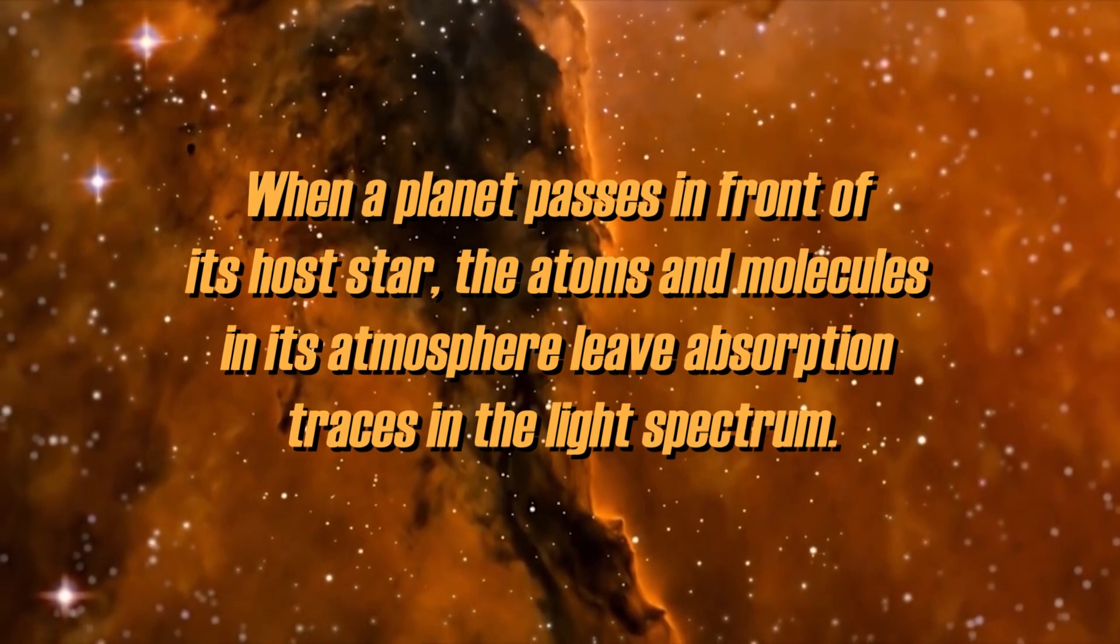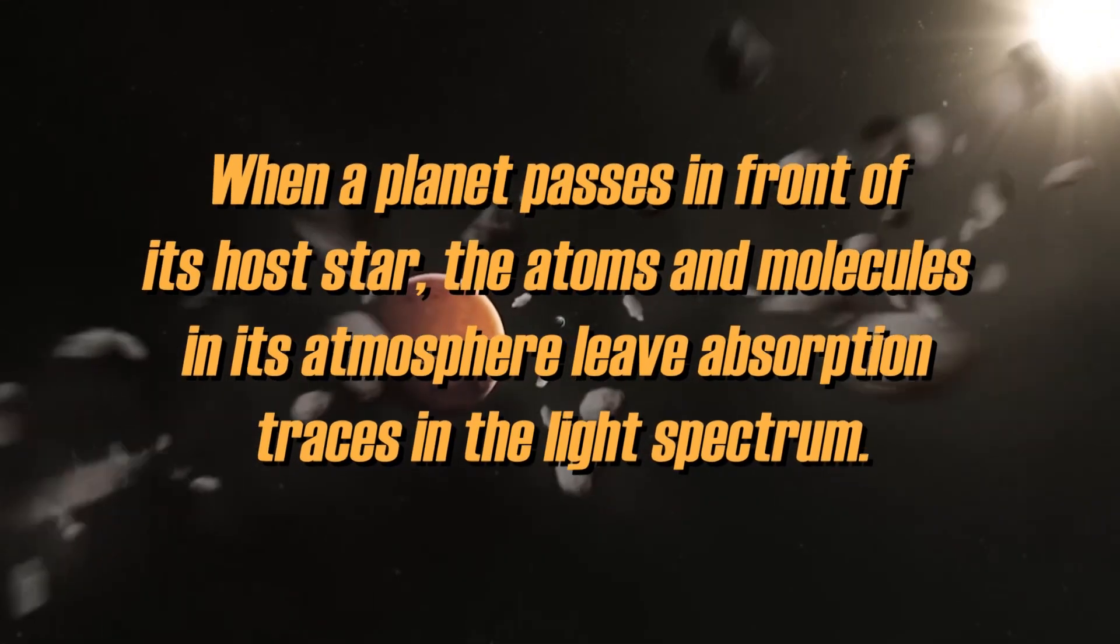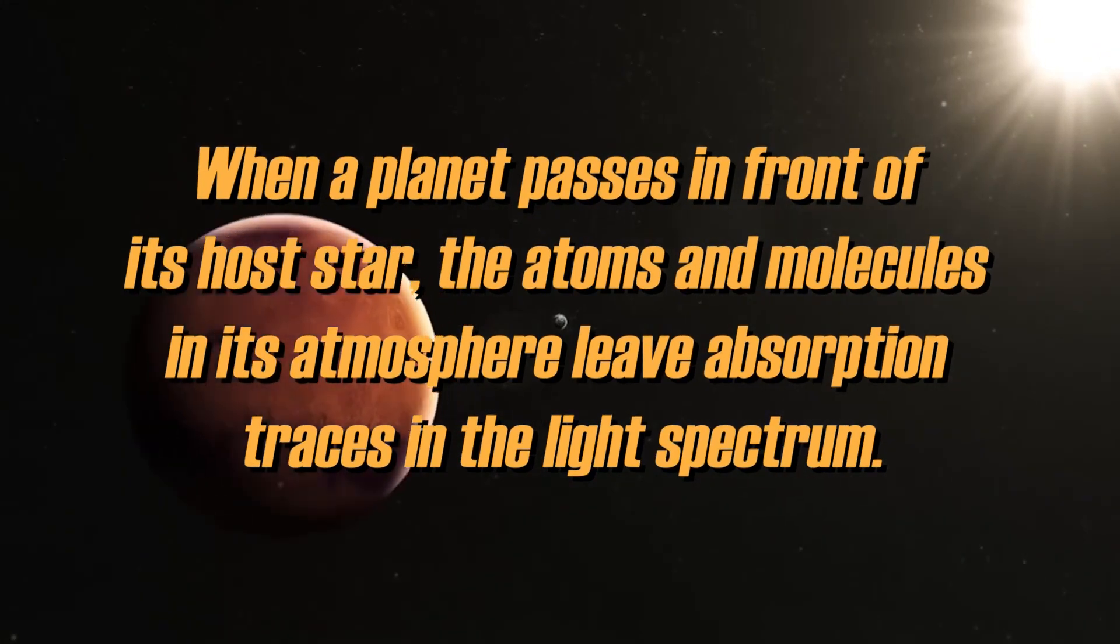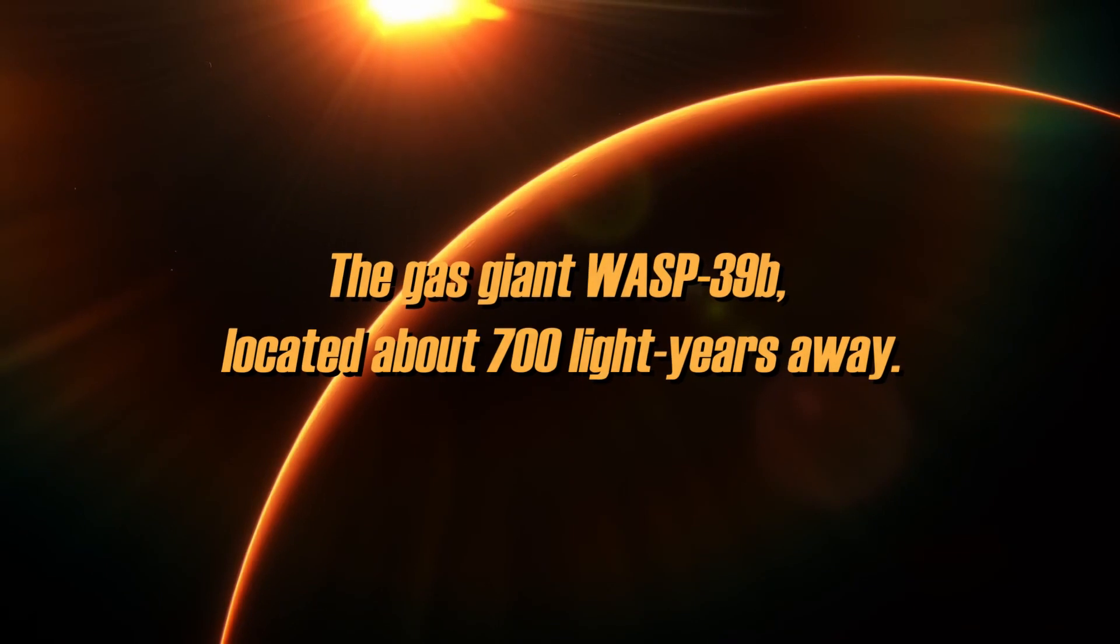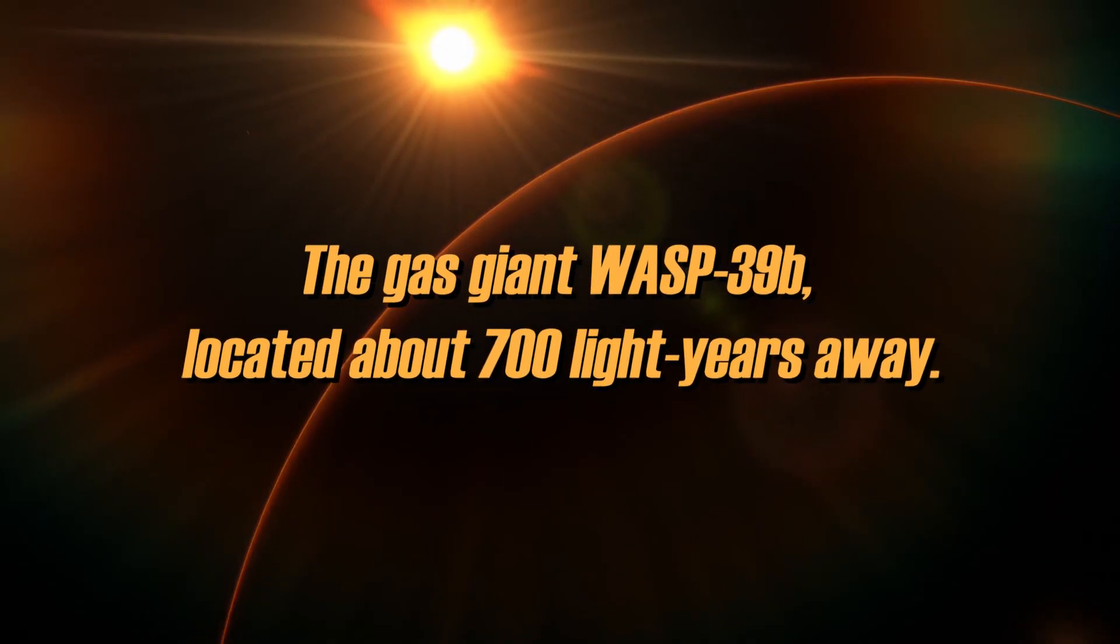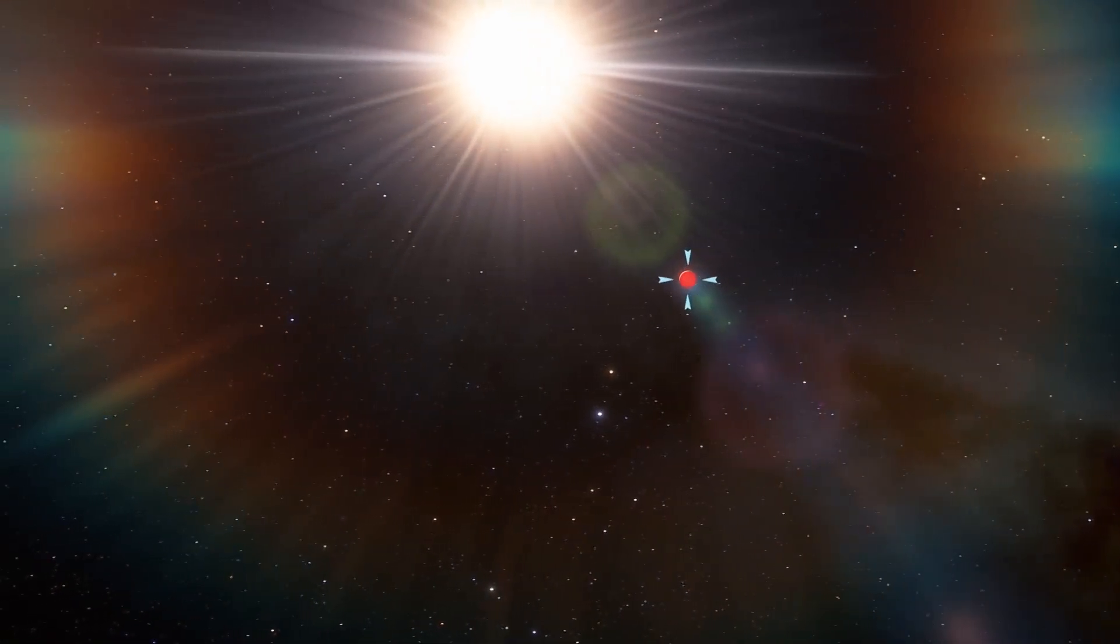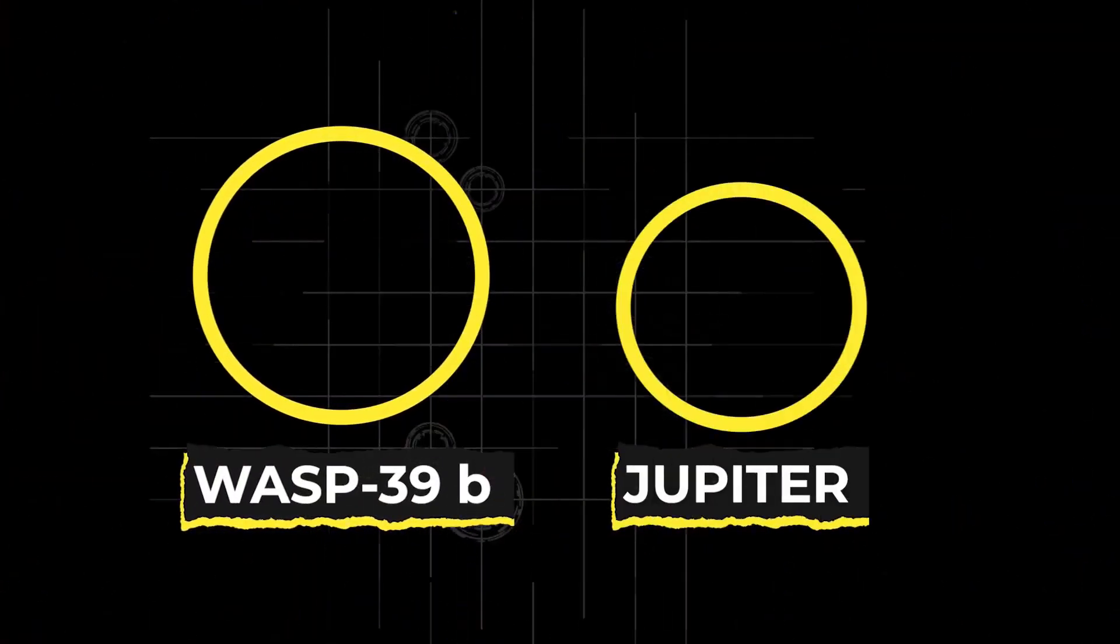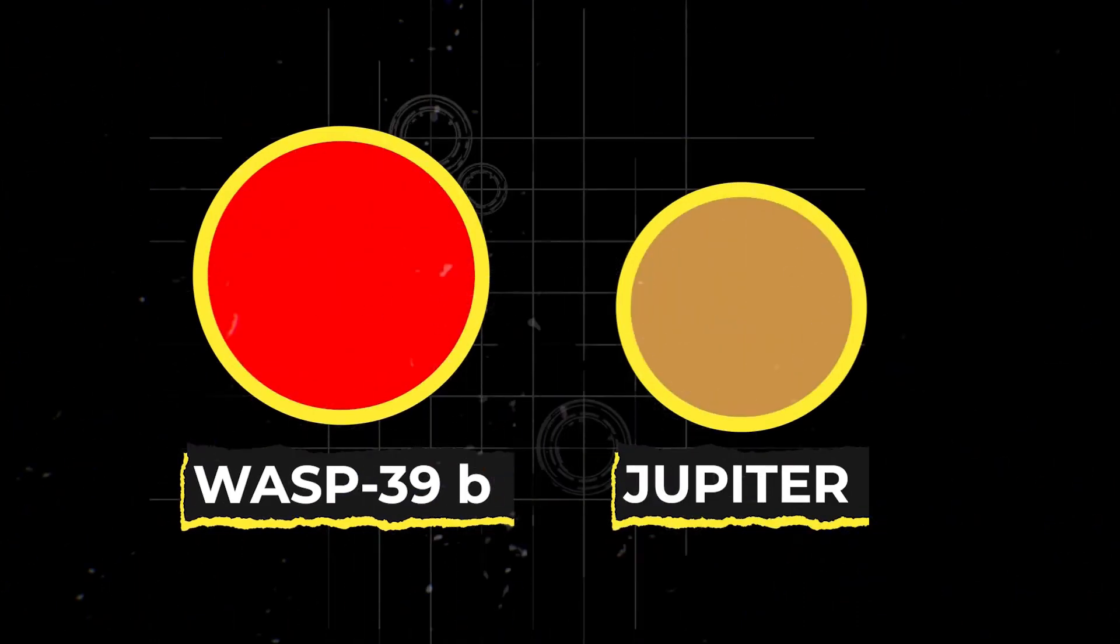When a planet passes in front of its host star, the atoms and molecules in its atmosphere leave absorption traces in the light spectrum. A fascinating example of this is the gas giant WASP-39b, located about 700 light-years away. This planet shows us how revealing the investigation of these transit signals can be. Since WASP-39b exceeds mighty Jupiter in size by a factor of 1.3, analysis of its gaseous envelope has been especially revealing.